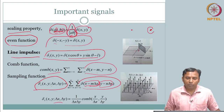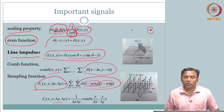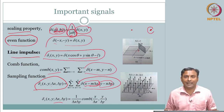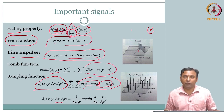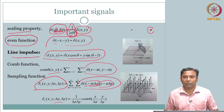We have a few more important signals to cover before wrapping up the review of the signals part. We did point impulse, line impulse, and then we talked about the sampling function and the combination of the comb function — how it can be written for the sampling function.